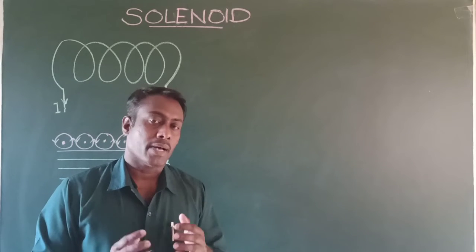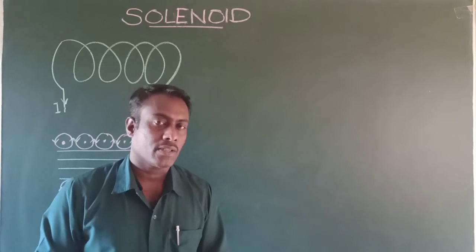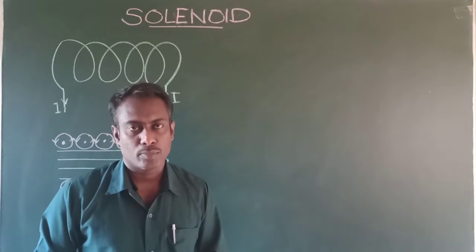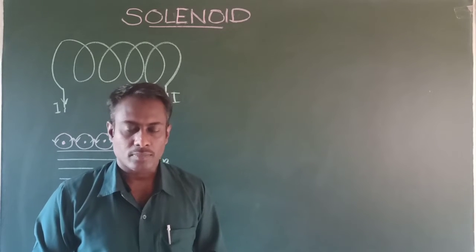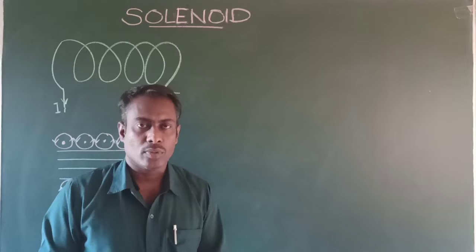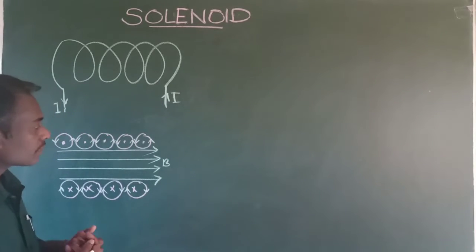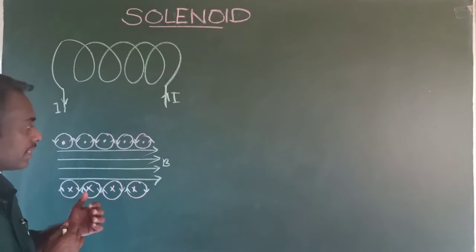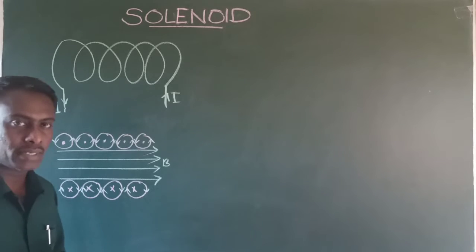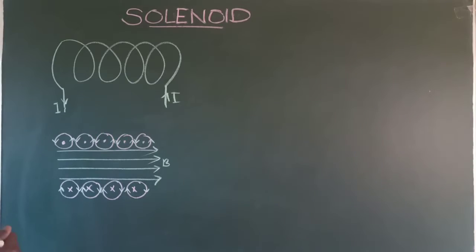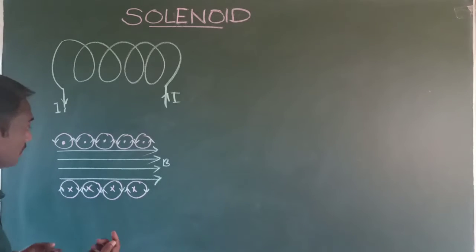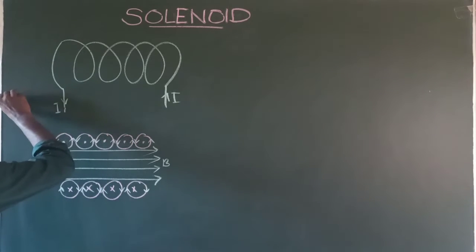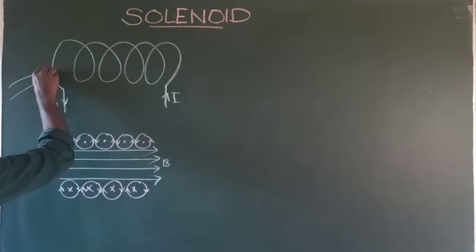In order to find out the magnitude of the magnetic field produced by a solenoid, we can use the right-hand thumb rule. By using the right-hand thumb rule, the magnitude of the magnetic field produced by a solenoid can be calculated. From the figure, you can see the direction of the magnetic field produced.